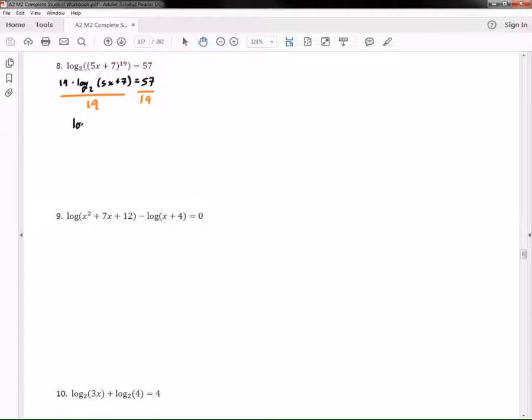Okay, we get log base 2 of 5x plus 7, and on this side I don't know if 19 goes into 57. Oh, it might go into it three times. Let's see, I'm going to check: 19 times 3, we have 3 times 9 is 27 and 3 times 1, we get 57. Oh snap, I was right, that's cool.